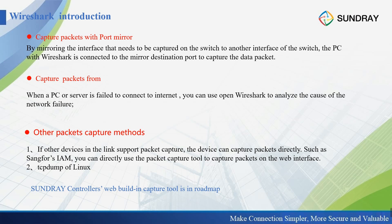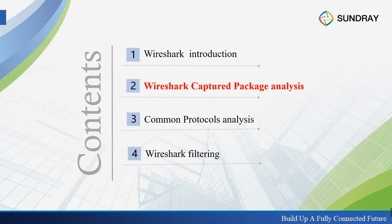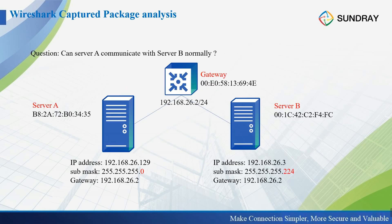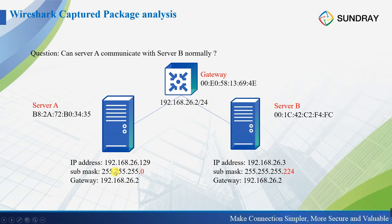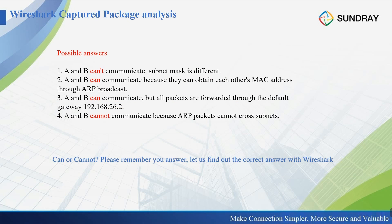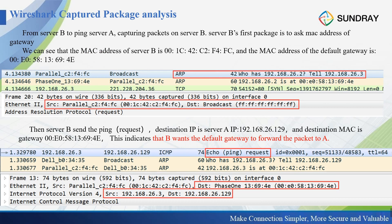For the second part, we analyze some packets. Starting from a troubleshooting question: Server A and Server B have IP addresses in different subnets — one is /24 and the other is /28 — but they share the same default gateway. The question is: can Server A and Server B communicate normally?